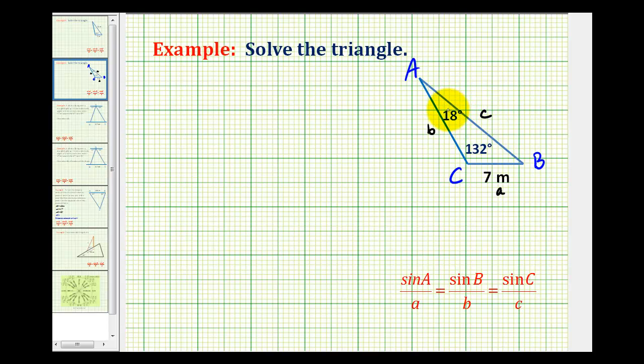Right away, if we're given two interior angles of a triangle, we should be able to determine the third angle, because we know the sum of the interior angles must be 180 degrees. So the measure of angle B would be equal to 180 degrees minus 132 degrees minus 18 degrees. So the measure of angle B is going to be equal to 30 degrees.